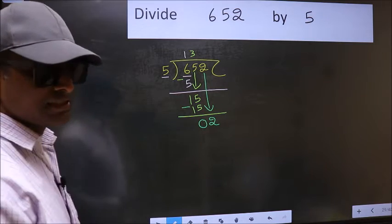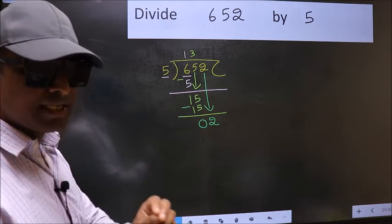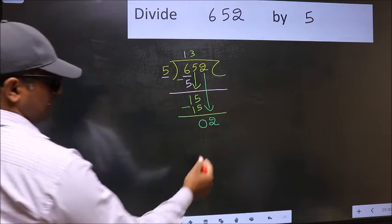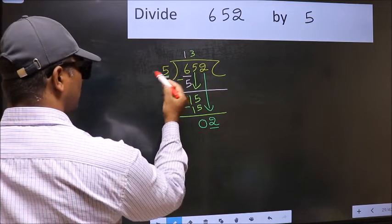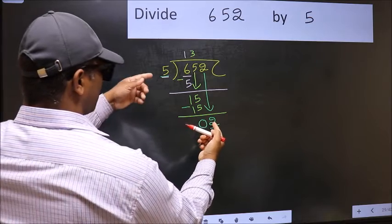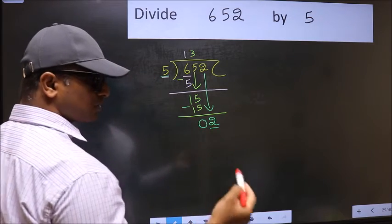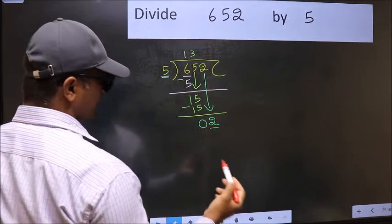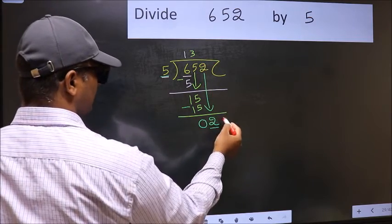And the mistake is this. Here we have 2 and here 5. 2 is smaller than 5. So what many do is they directly put dot and take 0.